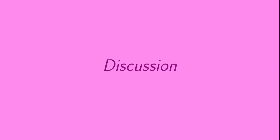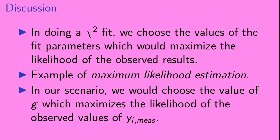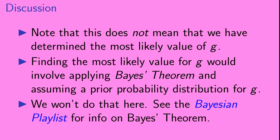Okay, so now let's give a brief discussion of what we've seen. In doing a chi-squared fit, we choose the values of the fit parameters which would maximize the likelihood of the observed results. This is an example of what is called maximum likelihood estimation. In our scenario, we would choose the value of g which maximizes the likelihood of the observed values y i measured.